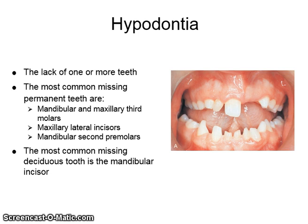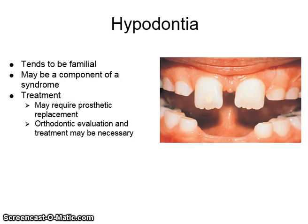The most common missing deciduous tooth is the mandibular incisor. Hypodontia tends to be familial and may be a component of a syndrome. Treatment may require prosthetic replacement; orthodontic evaluation and treatment may also be necessary.